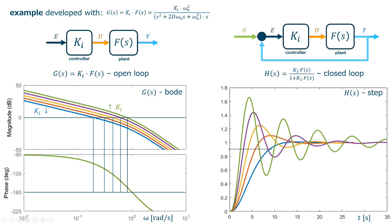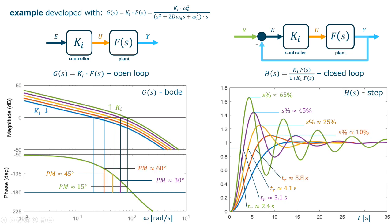30 degrees phase margin, 45 degrees phase margin lowers to 25% overshoot in 4.1 seconds. 60 degrees for 10%, and with 70 degrees we have 0% overshoot.